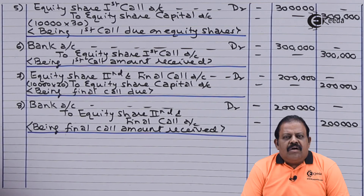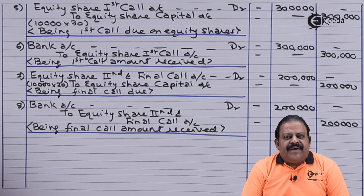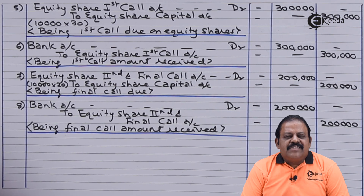In this question we are required to focus on the amount of securities premium. In the absence of information, it should always be adjusted with the allotment amount. Securities premium is a profit for the company and is credited to a separate account. Thanks for watching this video — stay tuned with Ikeda and subscribe to our channel. Thank you.